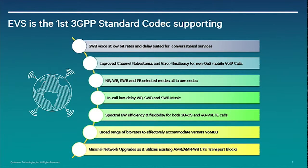The improved robustness is really one of the key attributes of this codec. It allows you to work not only on QoS-type carrier-grade VoLTE, but also very well on non-QoS connections. We've demonstrated performance at 10% packet erasure — at that level, AMR and AMR Wideband cannot maintain normal conversation, whereas you barely hear quality degradation with EVS. That particular mode of operation will justify this for Voice over Mobile Broadband, not just VoLTE. It is the ideal codec for those services. It combines narrowband, wideband, super wideband, and fullband all into one codec.